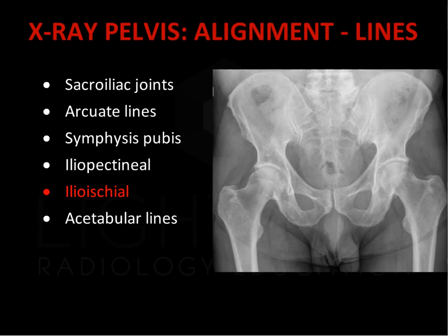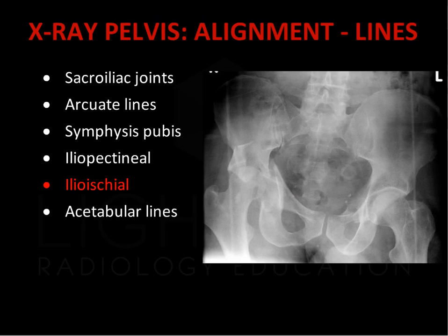The ilioischial line extends from the iliac bone to the medial wall of the acetabulum. As with the iliopectineal line, it should be a smooth curve with no focal cortical disruption. This case demonstrates a comminuted fracture of the right acetabulum with disruption of the iliopectineal line. The second injury to the main pelvic ring is a fracture of the left superior pubic rami with a corresponding fracture of the left inferior pubic rami related to disruption of the left obturator ring.